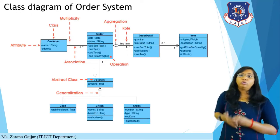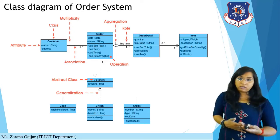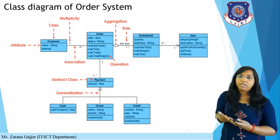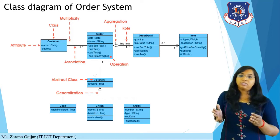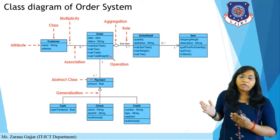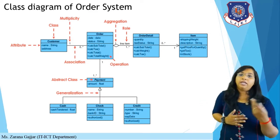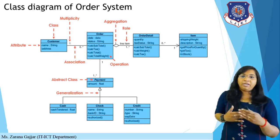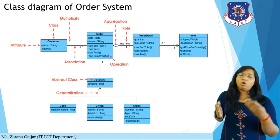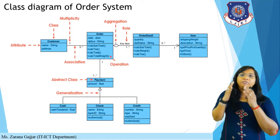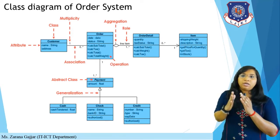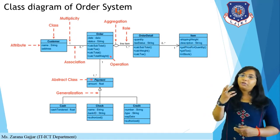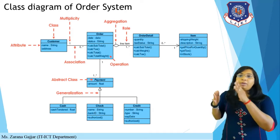Now let's look at the class diagram of a food ordering system. There are multiple classes: customer, order, order detail, item, and payment. The customer class has attributes name and address. The multiplicity is 0 to 1 or 1 to many — any customer can order any number of items — so there is a one-to-many relation with an association line between the customer class and the order class.